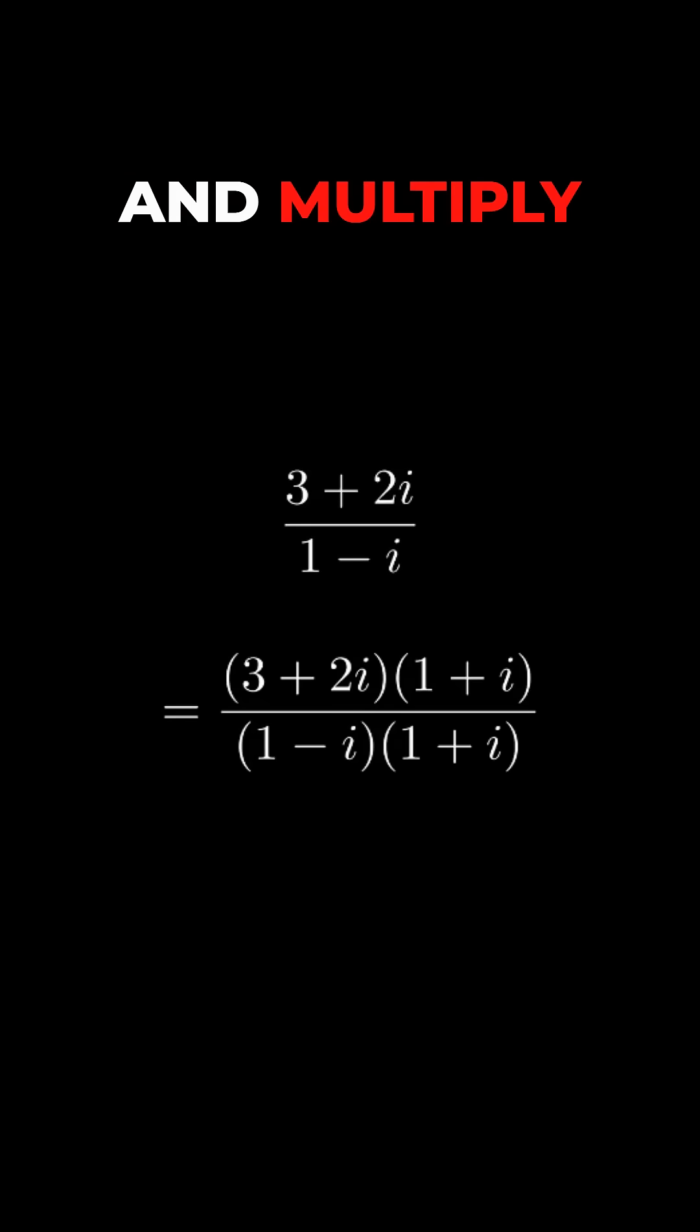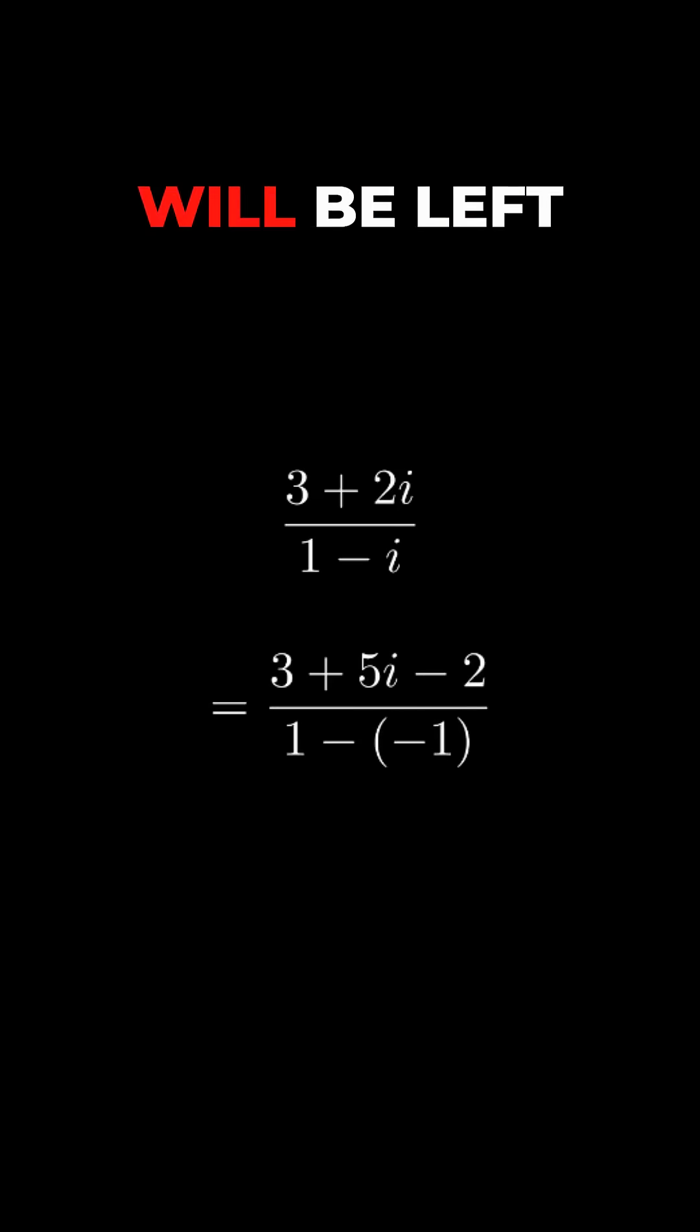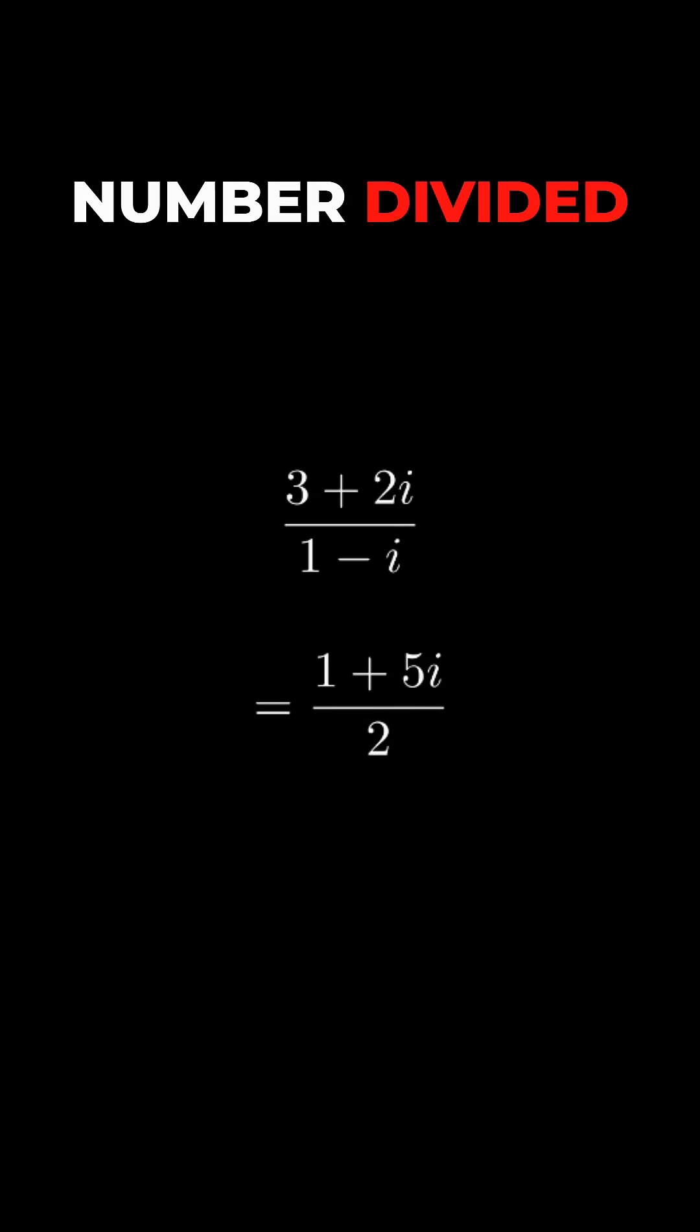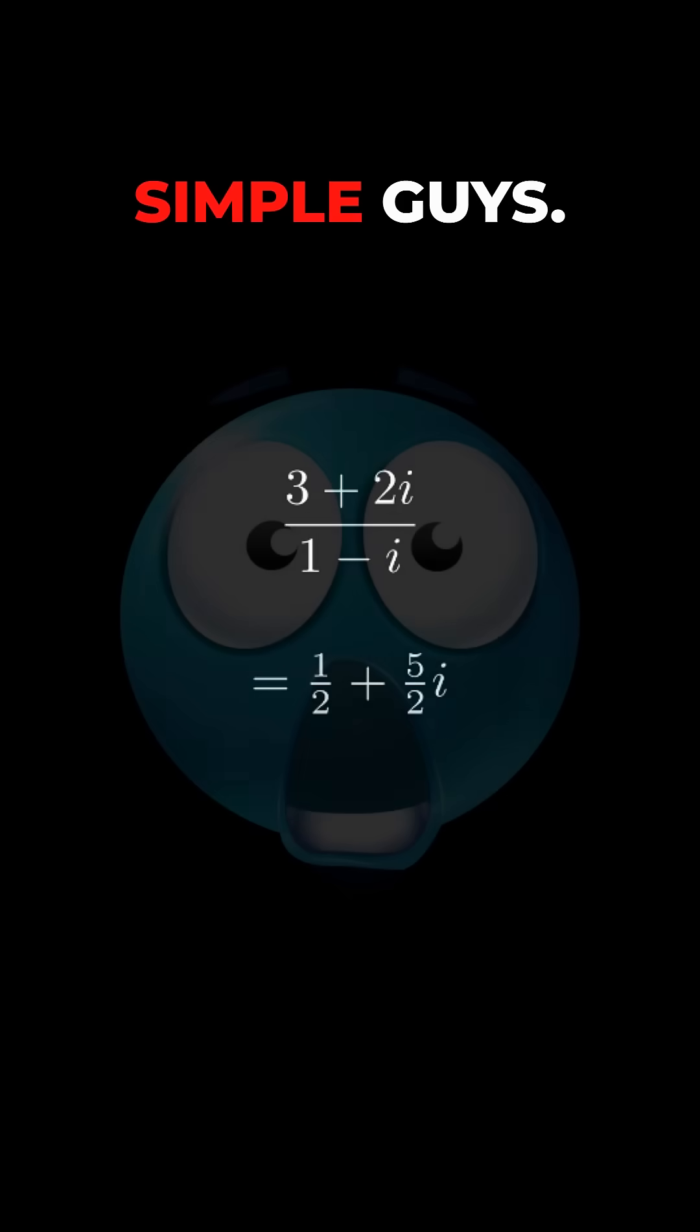Division is the hardest thing to do. You need to take the term in the denominator and multiply both parts of the division. Then calculate two multiplications, simplify the bottom and the top, and you will be left with a complex number divided by a number, so don't forget to divide both terms in the numerator. It is that simple guys.